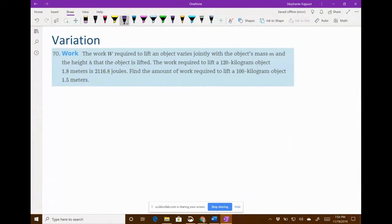We're going to be multiplying here. Jointly with the object's mass and with the height. So that means we're multiplying the mass times the height. They're telling us the work is equal to something. Whenever we have variation, we always have a constant that we need to find. So you always have K, which is some constant that you need to figure out what the number is. And then we have mass times height multiplied together. So we're going to have K M H.